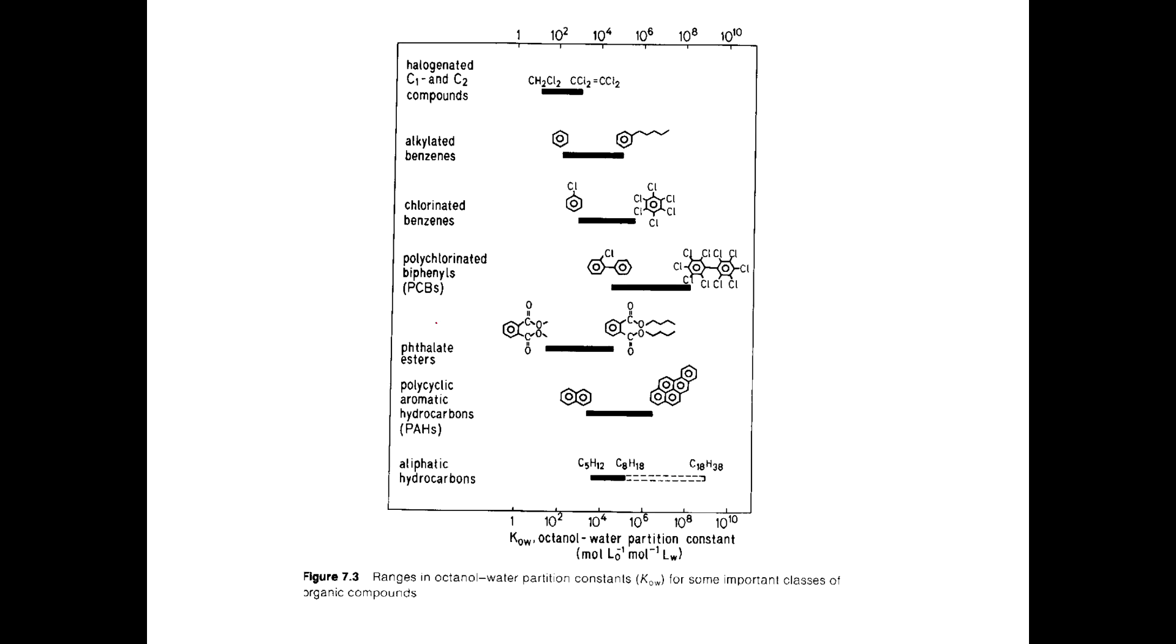So here's an example. This is from the older version of your textbook, kind of showing the ranges of KOW values you could expect. So these small C1 and C2 compounds, kind of a small range. The KOW on the lower side, around 10 to 1,000. That's 10 to the 3rd. So on the lower end, then here's your alkylated benzenes.